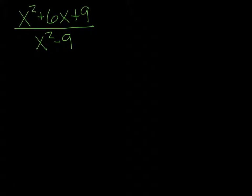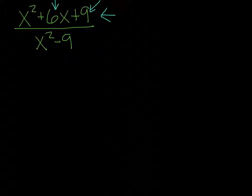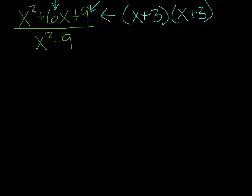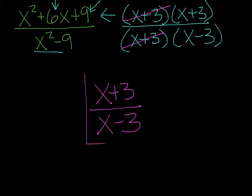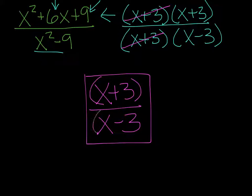Simplify x squared plus 6x plus 9 over x squared minus 9. We need to factor first. For the top, we need factors of 9 that add to 6 — that's 3 and 3 — so x plus 3 times x plus 3. On the bottom, we have a difference of squares: x plus 3 times x minus 3. Now one set of x plus 3's cancels. Our final answer is x plus 3 on top and x minus 3 on the bottom. You can't cross out through the groups, only whole groups themselves.